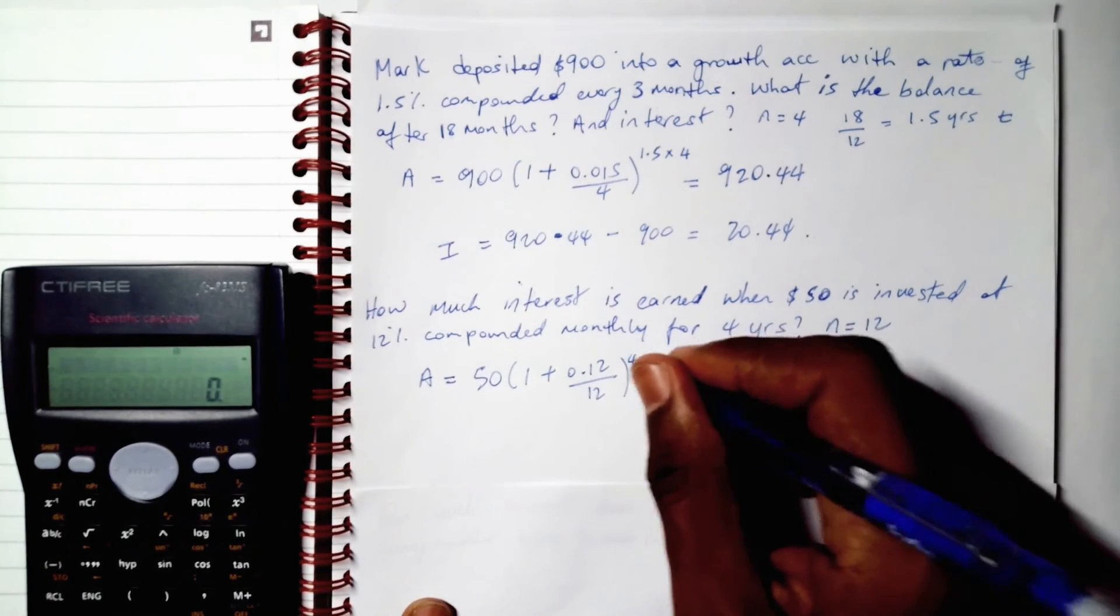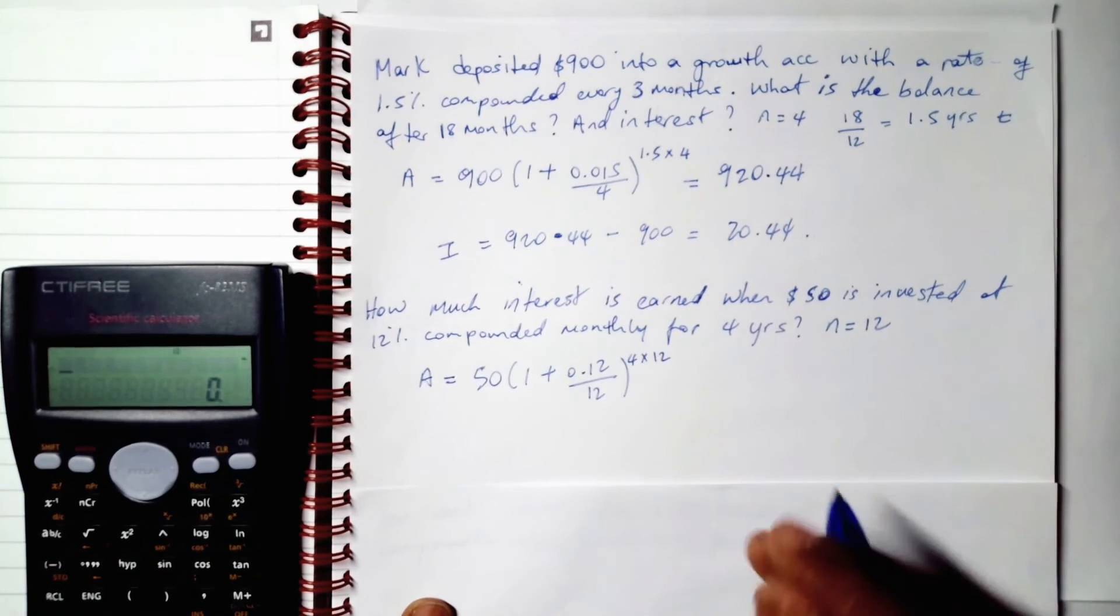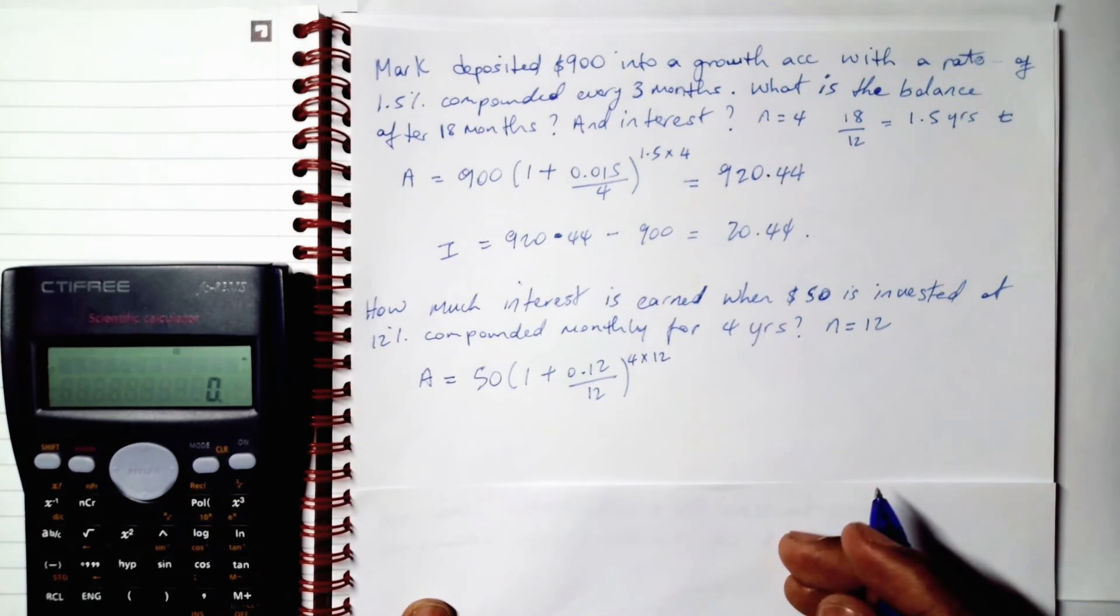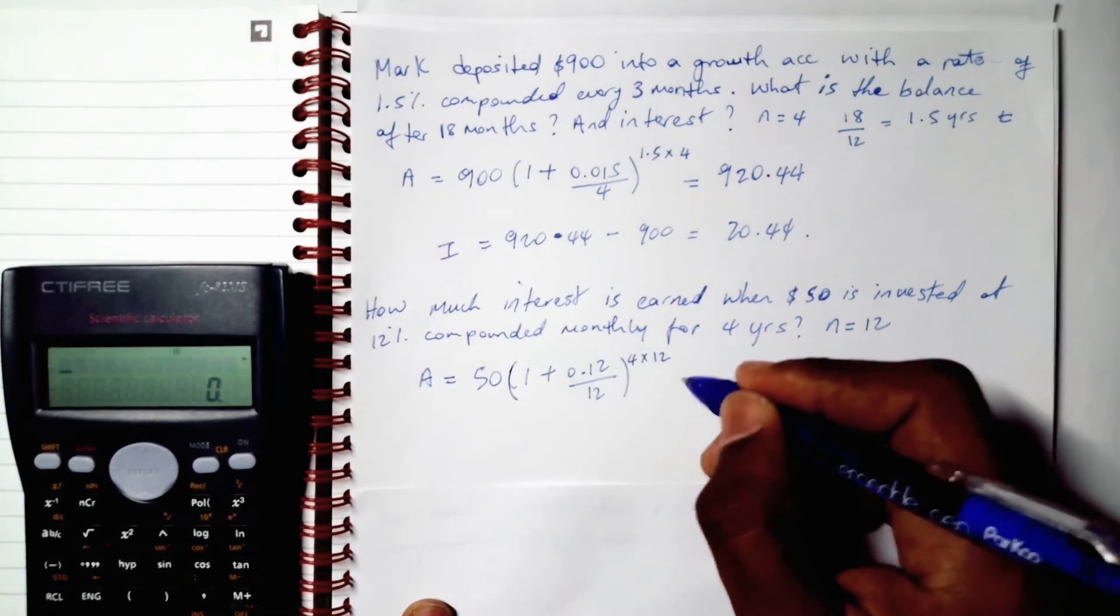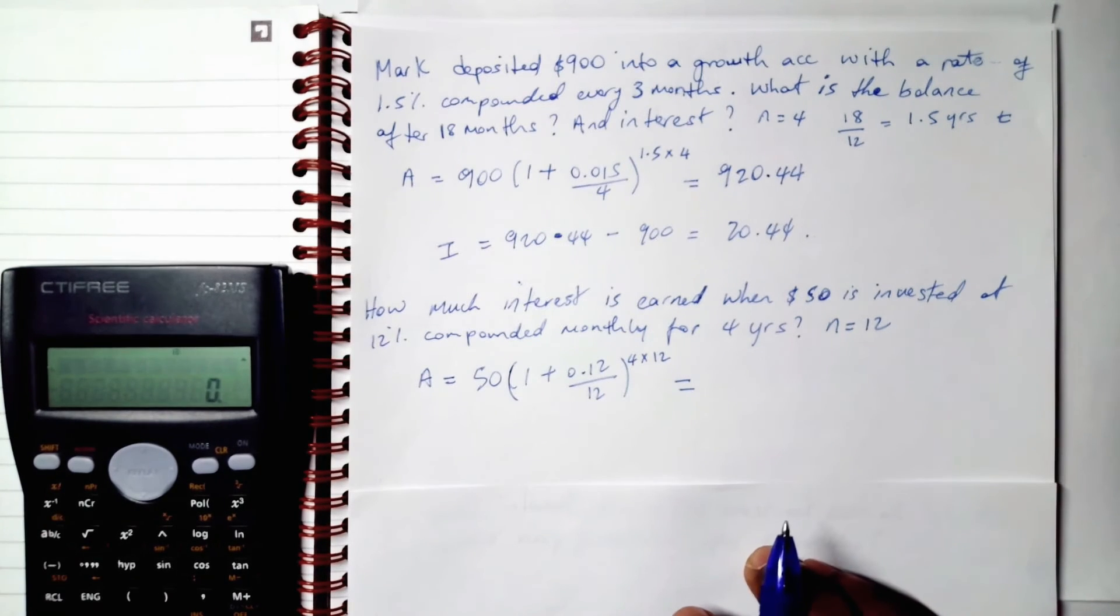Raised to the 4 times 12. All right. All right. This is equal to. This is child's play. I'm sure you have this under control by now. 0.12, not 0, divided by 12, close bracket.